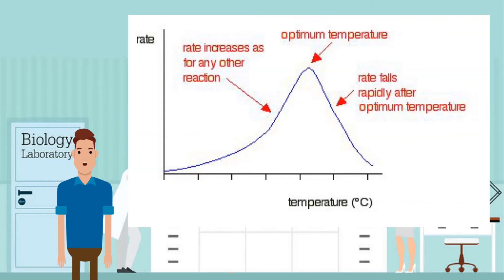Some enzymes, like bacterial enzymes which live in hot springs, can have their optimum temperatures at 90 degrees Celsius. Past the optimum temperature, the enzyme is denatured and the rate decreases. It is denatured by the destruction of the bonds that hold the protein structure.